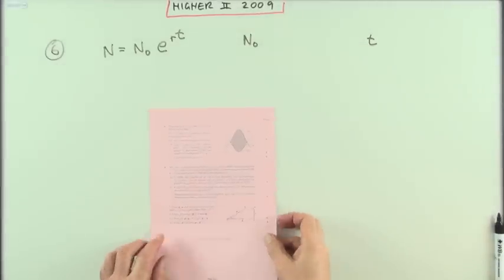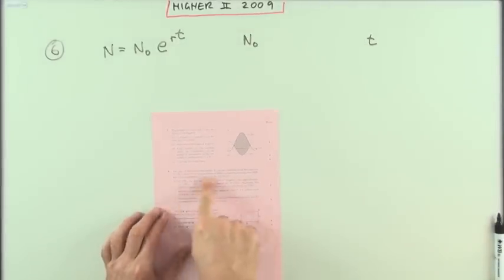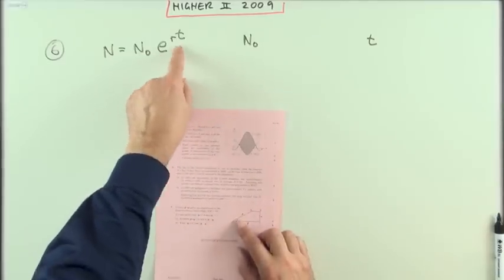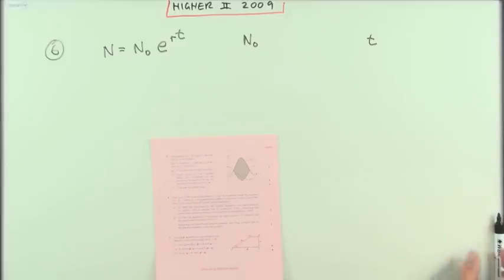Number 6N from the 2009 Higher paper 2. A little population growth question. The typical growth equation, E with a positive index.